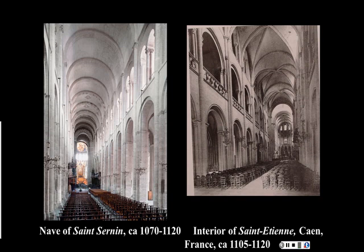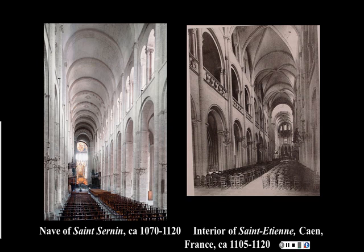Using a groined vault means they are able to add a new third story to the walls: the colonnade at the base, then the tribune gallery like a second-floor balcony, and now a clerestory — a row of windows — which allows the churches to be more light-filled. It's all relative, since even a Gothic cathedral like Notre Dame is still quite dark inside. But Saint-Étienne is still lighter than Saint-Sernin, even if this photo of Saint-Sernin looks deceptively light-filled.